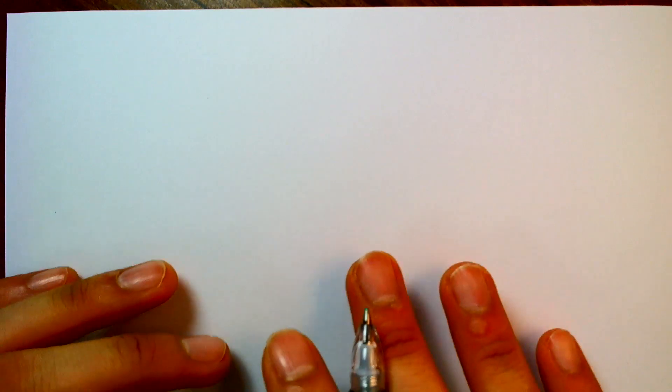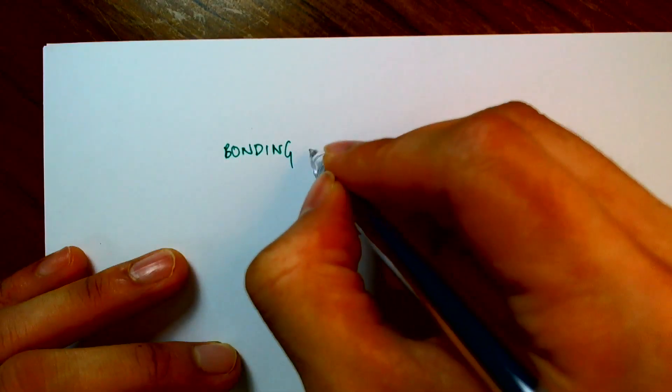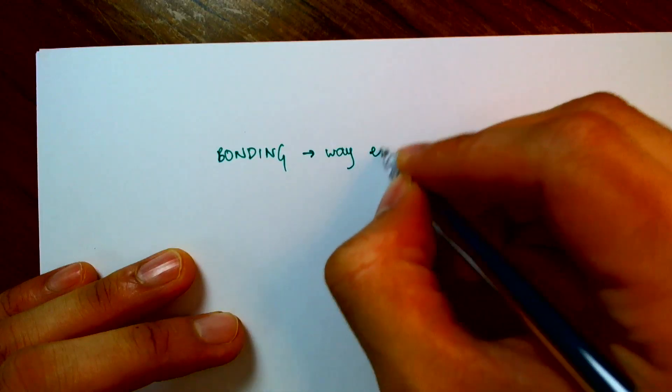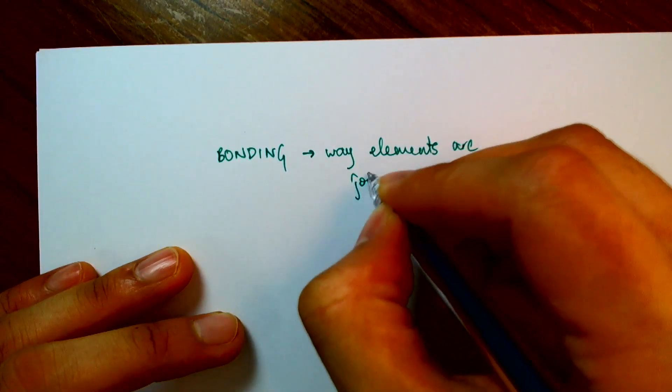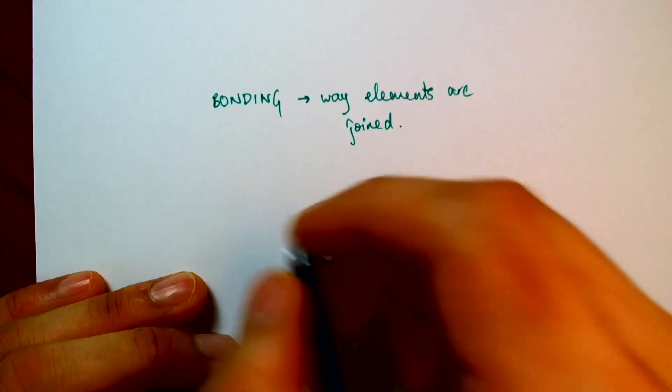So the two main features to look at when we are taking elements and making compounds out of them are the way they join together. So bonding refers to the way the elements are joined, and once they are joined,